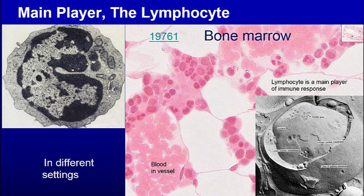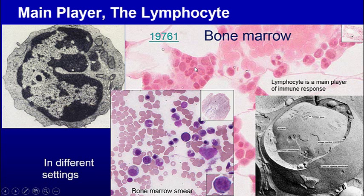The main player in the immune system is a lymphocyte. It has a nucleus, a little bit of cytoplasm, lots of ribosomes, and mitochondria. We can see some lymphocytes here in the bone marrow, which is a source of them. You see a blood vessel here, but these are cells in the marrow itself. And if we look at a blood smear, we can see lymphocytes in there as well.